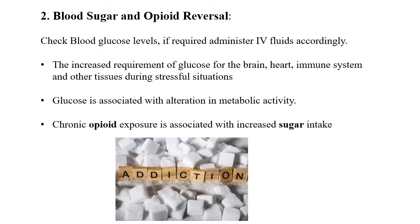Poisoned patients normally suffer from hypoglycemia due to the increased requirement of glucose for the brain, heart, immune system, and other tissues during the stressful situation. Glucose is associated with alteration in metabolic activity, and chronic opioid exposure is associated with increased sugar intake, so patients should be supplemented with glucose for better treatment outcomes.